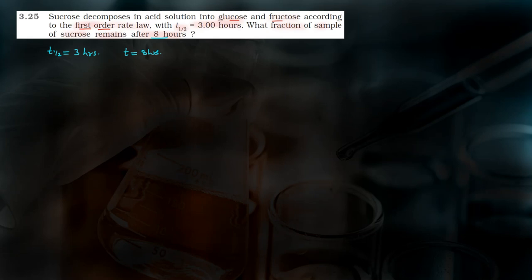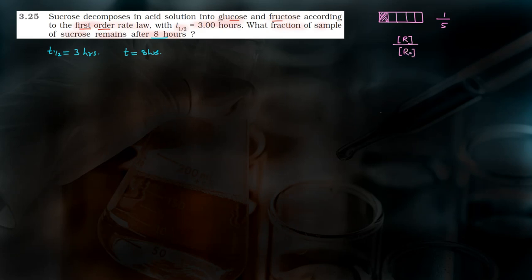सबसे पहले fraction का concept समझेंगे। मान लीजिए एक chocolate है और उसके 5 pieces हैं। तो fraction कितना होगा? जितना बचा है, 1, divided by total, 5. ऐसे ही concentration of reactants की बात करें तो fraction होगा: concentration at time t divided by initial concentration — यानी [R]/[R]₀. यही fraction की value हमें calculate करनी है।